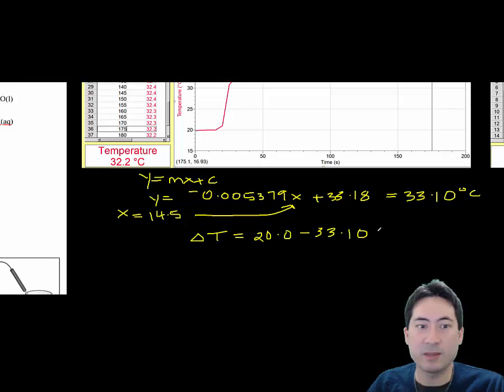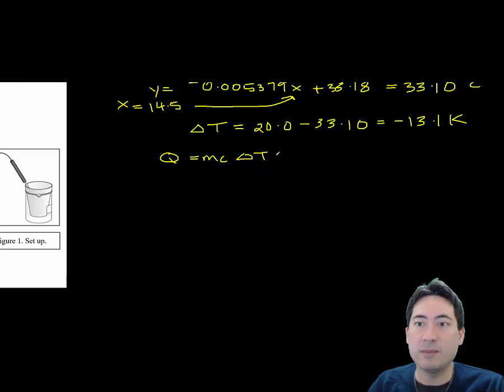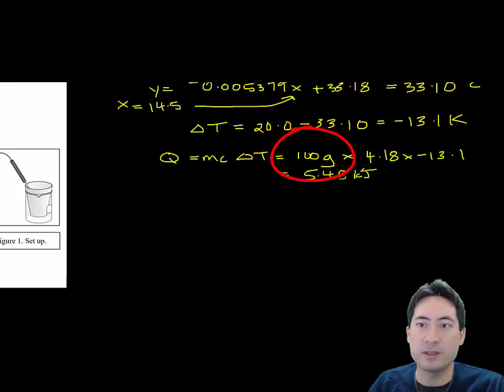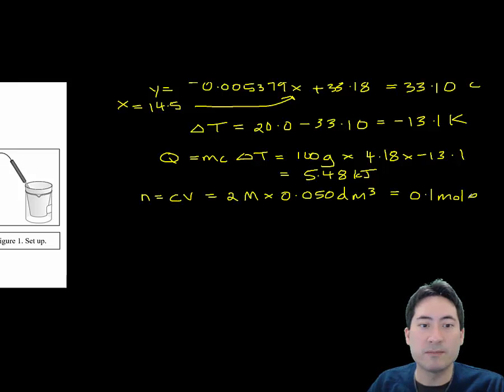Most importantly, the mass is 100 grams because you added two 50 centimeter cubed volumes. We're assuming water, so we're going to make that 100. We times that out, and the number of moles must use n equals cV because we're dealing with solutions. There we get our value for enthalpy for the first reaction.